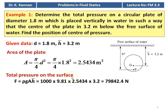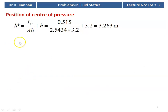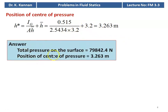The total pressure on the surface of the plate F equal to rho g A into h_bar. So rho is 1000, g is 9.81, area equal to 2.5434 and multiplied by 3.2 equal to 79,842.4 Newton. The moment of inertia of the circular plate I_g equal to pi d power 4 divided by 64, which is pi into 1.8 to the power 4 divided by 64 equal to 0.515 meter to the power 4. The position of center of pressure h* equal to I_g by A into h_bar plus h_bar, which is 0.515 divided by 2.5434 into 3.2 plus 3.2 equal to 3.263 meter. The total pressure on the surface is 79,842.4 Newton and the position of the center of pressure equal to 3.263 meter.